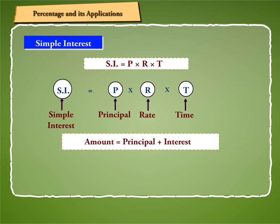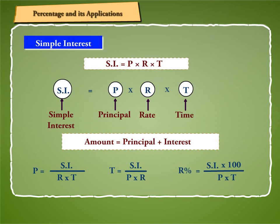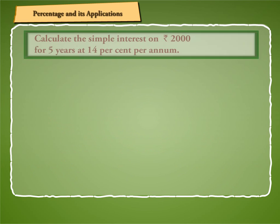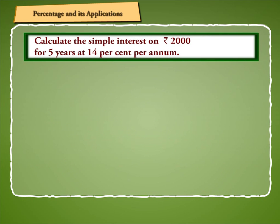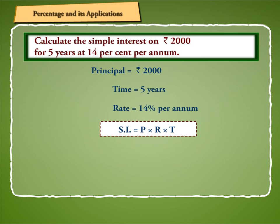Also, Amount = P + (P × R × T / 100), T = SI / (P × R), and R% = SI × 100 / (P × T). To understand this more clearly, let us calculate the simple interest on Rs. 2000 for 5 years at 14% per annum. Here, principal = Rs. 2000, time = 5 years, rate = 14% per annum. By using the formula SI = P × R × T / 100, we get SI = Rs. 2000 × 5 × 14 / 100 = Rs. 1400.